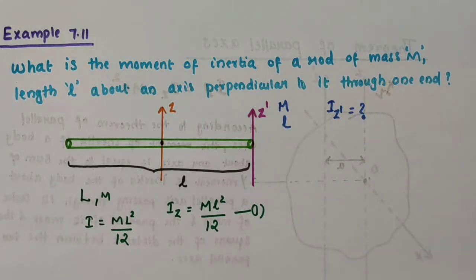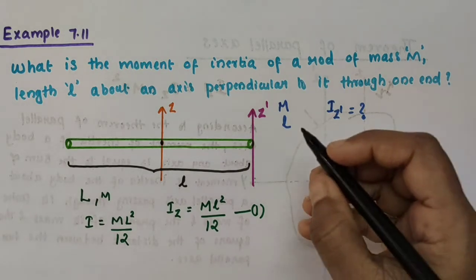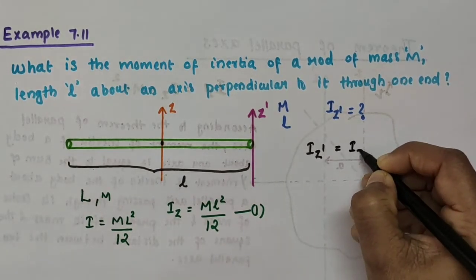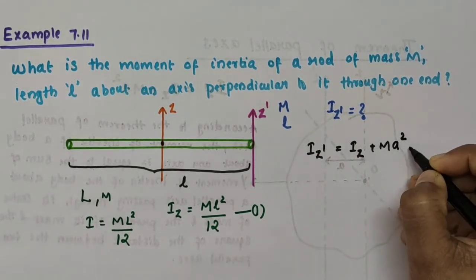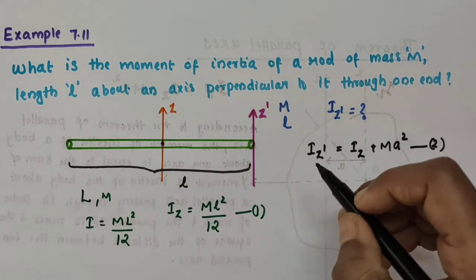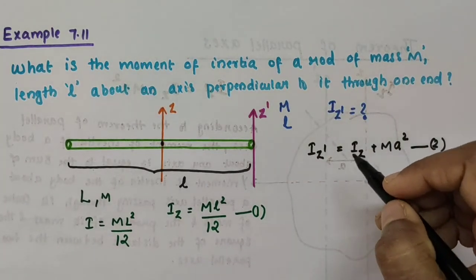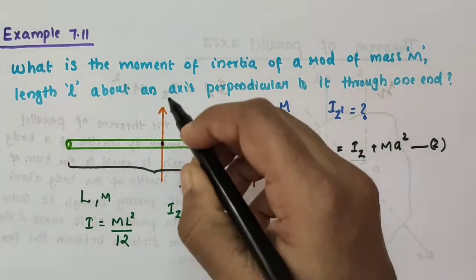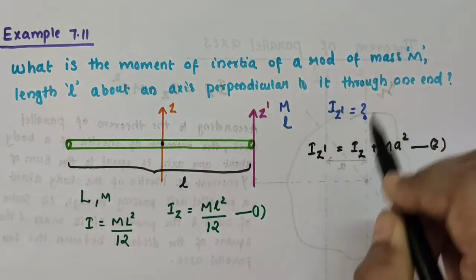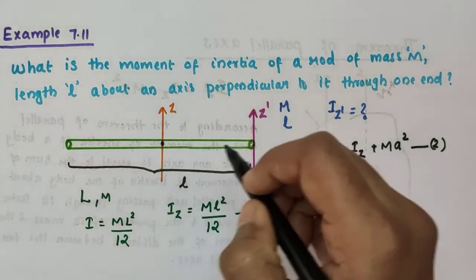From the parallel axis theorem, which we have already discussed in our previous video — please see the description box for the link — we have: I_z-dash = I_z + m·a². I am taking this as equation number 2. Here, I_z-dash is the moment of inertia about the z-dash axis which we want to find. I_z is the moment of inertia about the z-axis which we know. M is the total mass of the rod, and 'a' is the perpendicular distance between the two parallel axes.